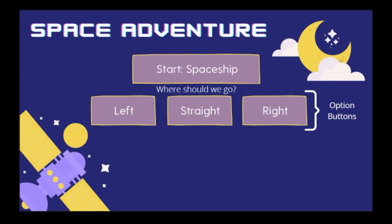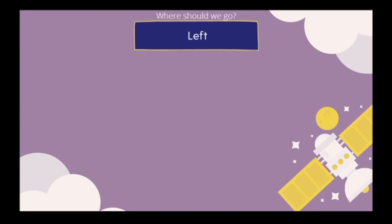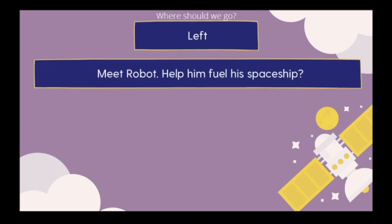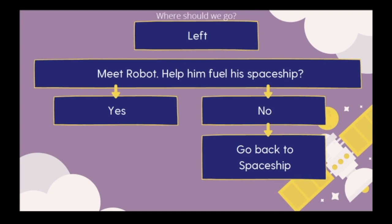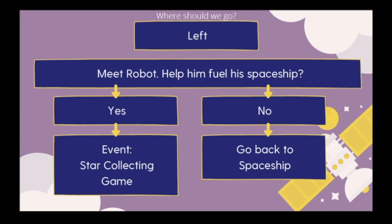If we want to go left, we're going to meet a robot who asks if we want to help him fuel his spaceship. You can answer yes or no. If you answer no, we go back to our spaceship and start over. If you answer yes, we start an event called the star collecting game, where we help him fuel his spaceship with stardust. Once we finish collecting stars, we go back to the spaceship.